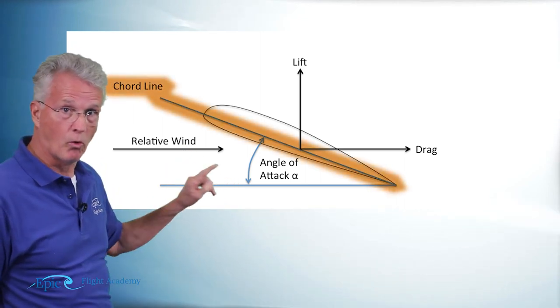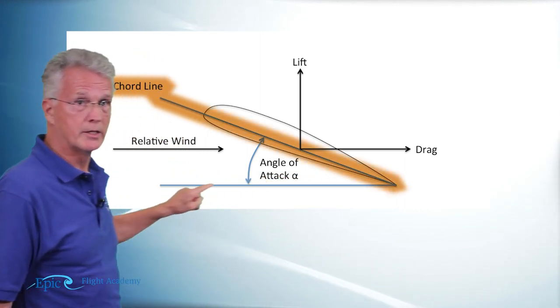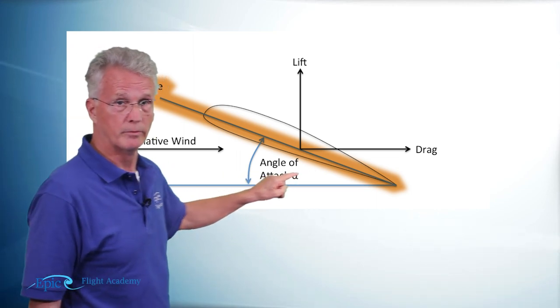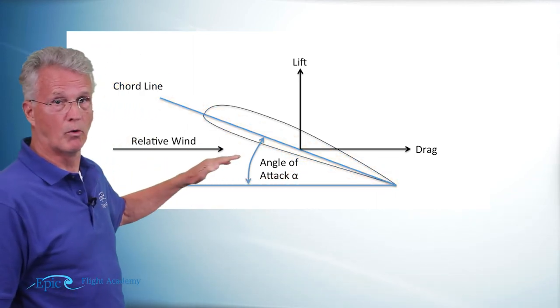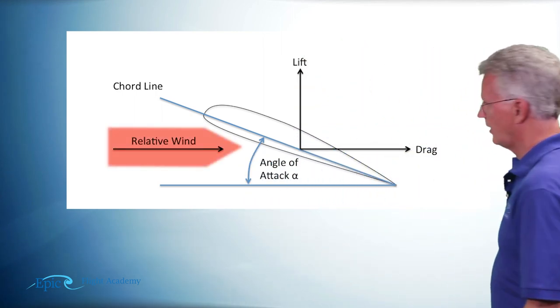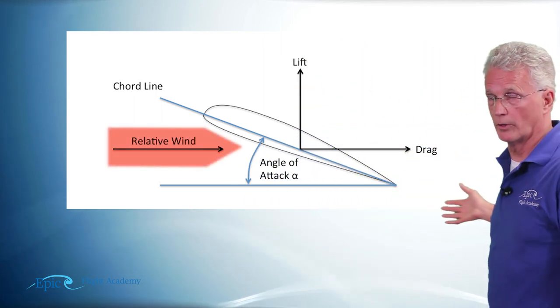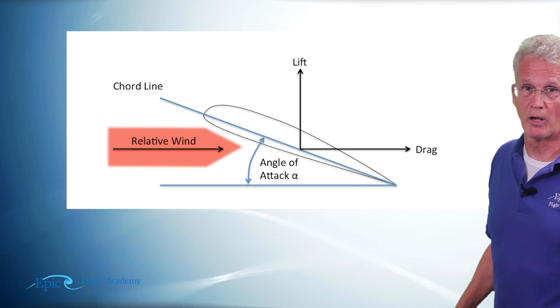It's between the cord line, which is the leading edge to the trailing edge of the airfoil, between the cord line and the relative wind hitting that airfoil. Remember what we said about relative wind: take the words and flip them. It's the wind relative to the aircraft's movement. So what we're doing is just working with that angle.